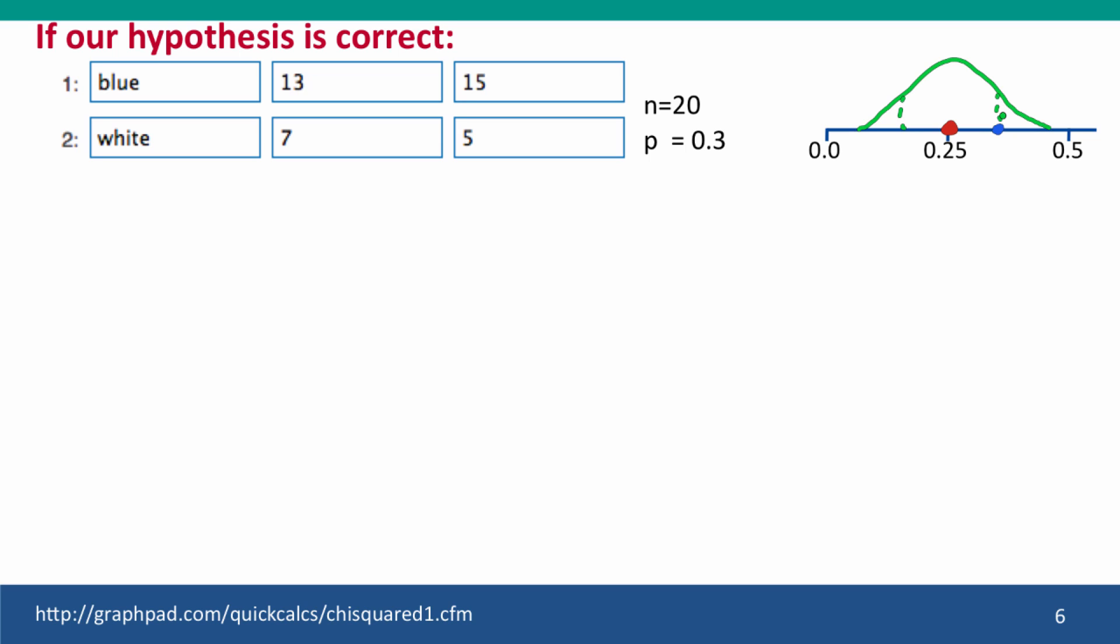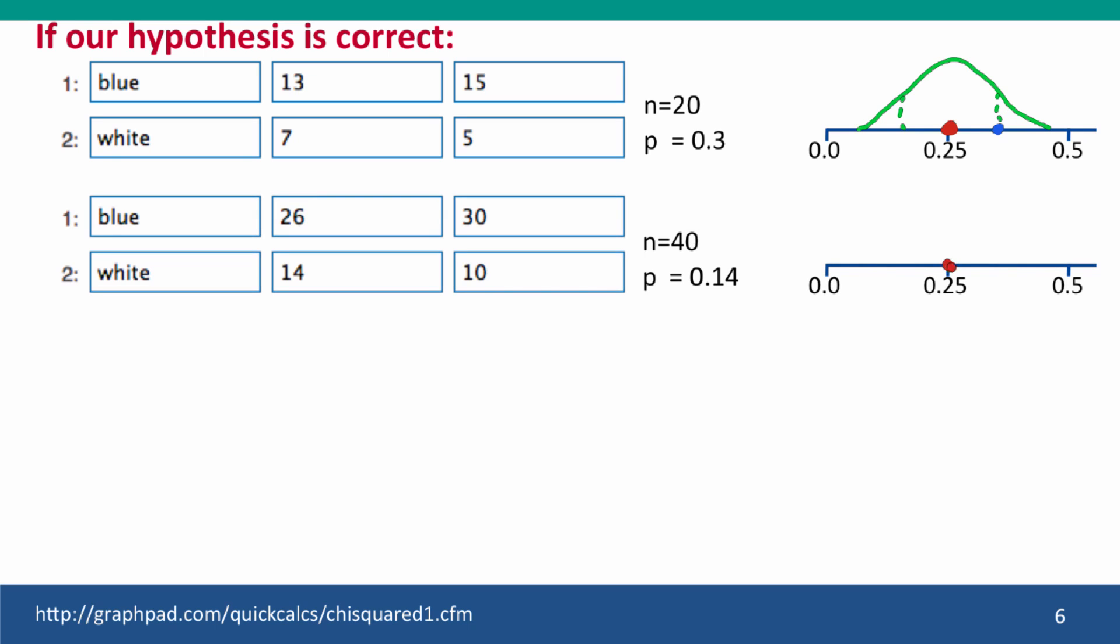But what if we'd done a larger experiment? Again, theory predicts this, we observe this, but now we had a sample size of 40. Now probability theory says that the distribution is going to be narrower. Given that the real mean is 0.25, now our observed result is getting a little closer to the edge. But the chi-square test still tells us, nope, this is close enough. There's still a 14% chance of getting this result if the true value of the population is this.